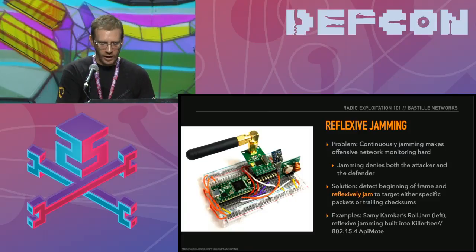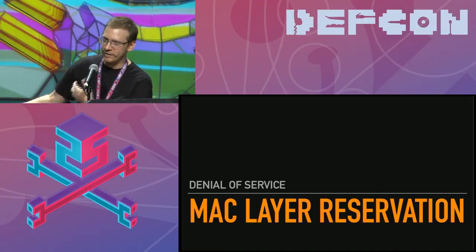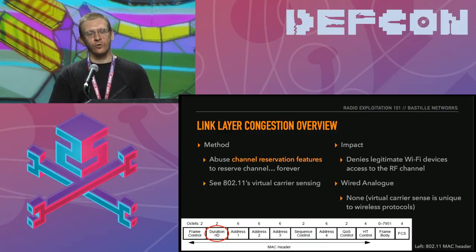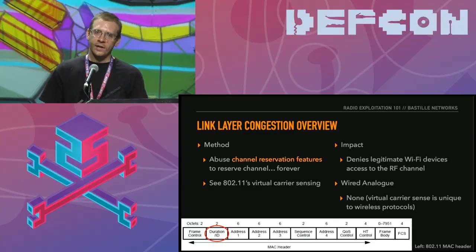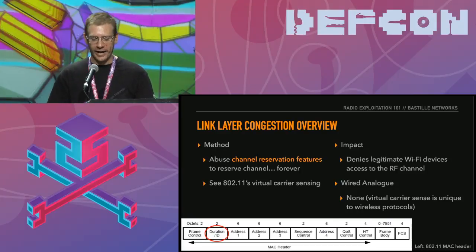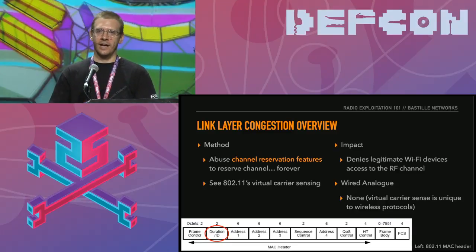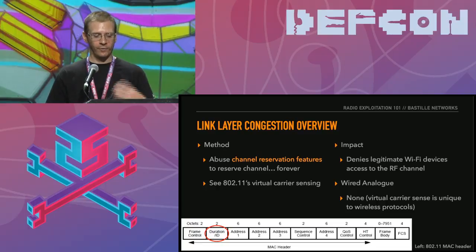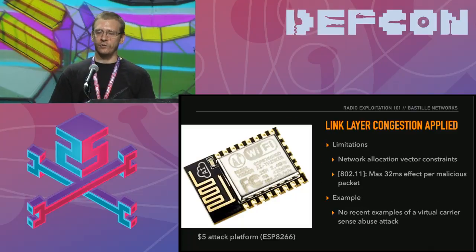Next is the evil twin attack — you can see the beard on the evil twin access point on the right. The concept is convincing other devices to connect to our access point or base station instead of the one they intend to connect to, allowing us to man-in-the-middle the traffic. This is very similar to an ARP spoofing or ARP cache poisoning attack on a wired network. The big limitation is that trust often exists between clients and access points or base stations, so to implement an evil twin attack we need to turn off that trust or replicate that trusted state. The Wi-Fi Pineapple is a good off-the-shelf device for Wi-Fi evil twin attacks. IMSI catchers do the same for cellular networks.